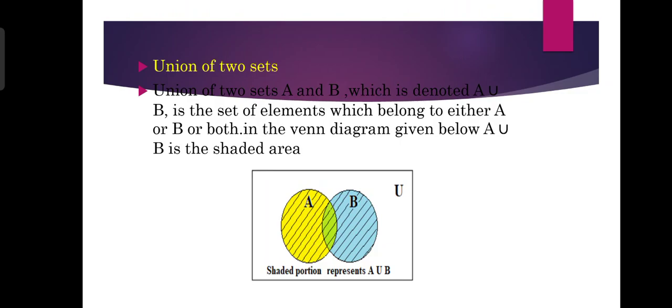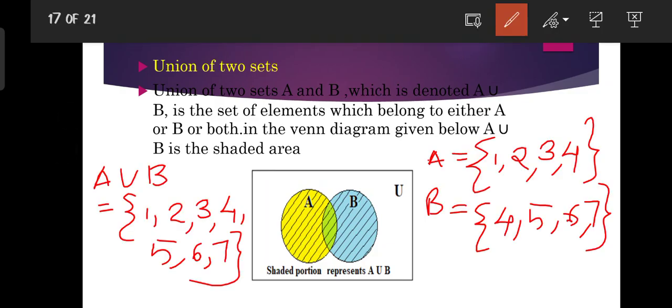Let's say set A equals {1, 2, 3, 4} and set B equals {4, 5, 6, 7}. If we compute A union B, it is equal to {1, 2, 3, 4, 5, 6, 7}. We separate these elements with curly brackets and enclose them. In the Venn Diagram, the whole shaded area in A and B represents the union.